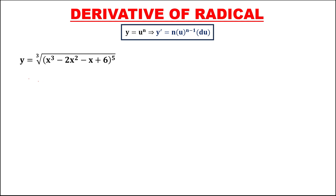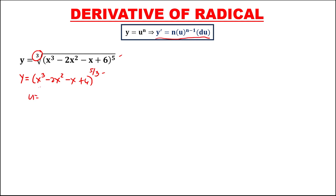For this next given, convert to exponential form: this is x to the power 3 minus 2x squared minus x plus 6, to the exponent 5 over 3, since the root is the denominator of the exponent. Then using this formula, u is the expression inside the parentheses: x to the power 3 minus 2x squared minus x plus 6.